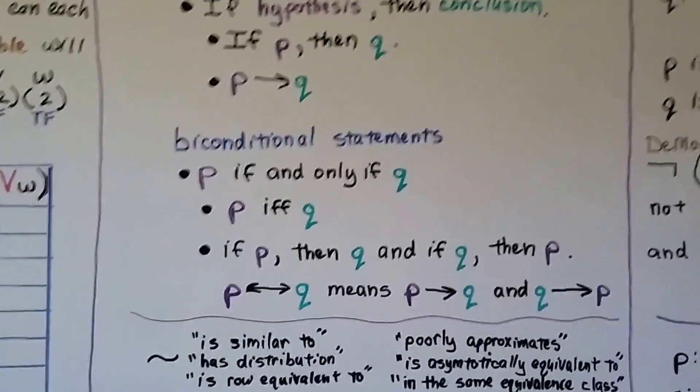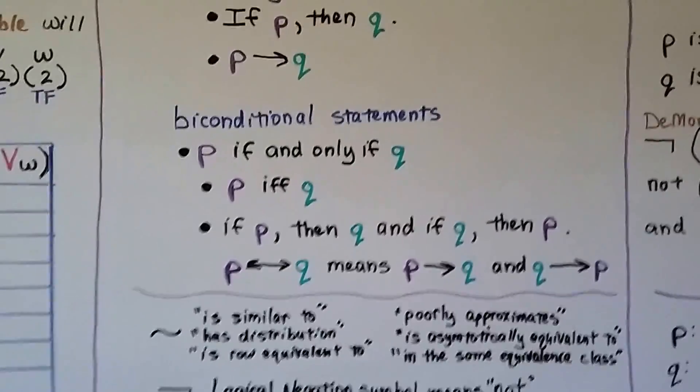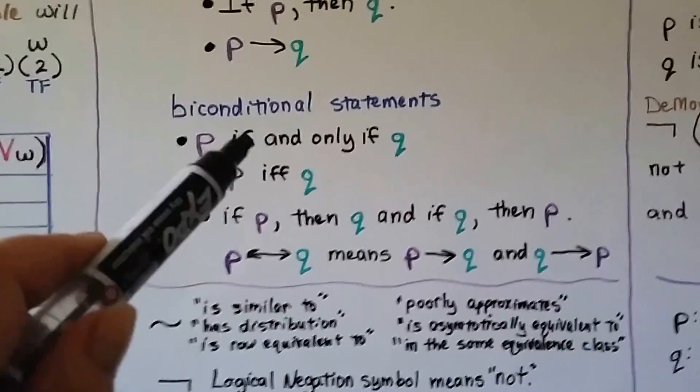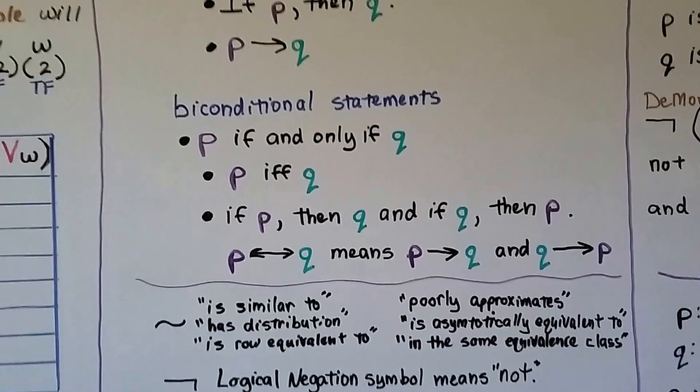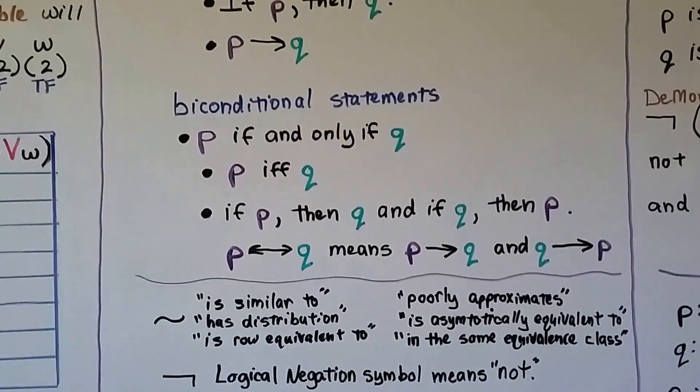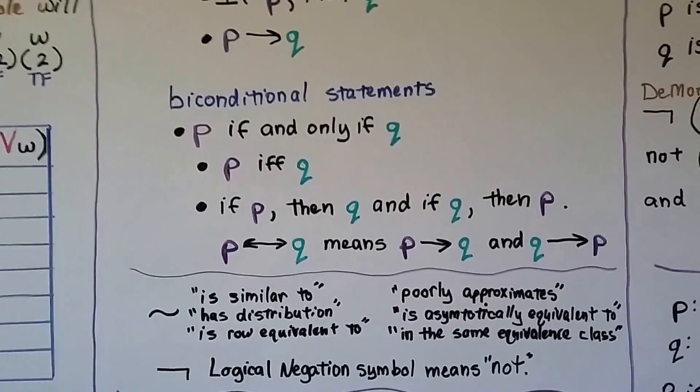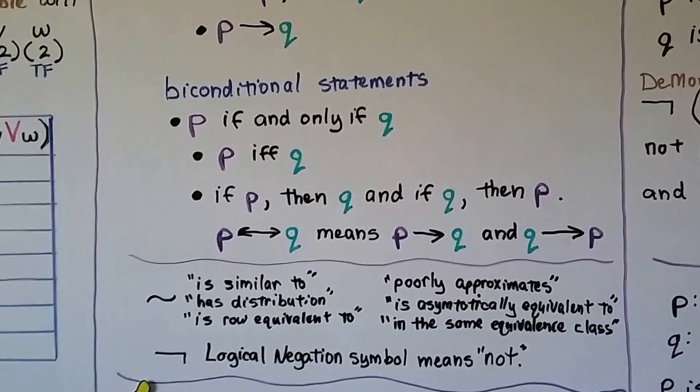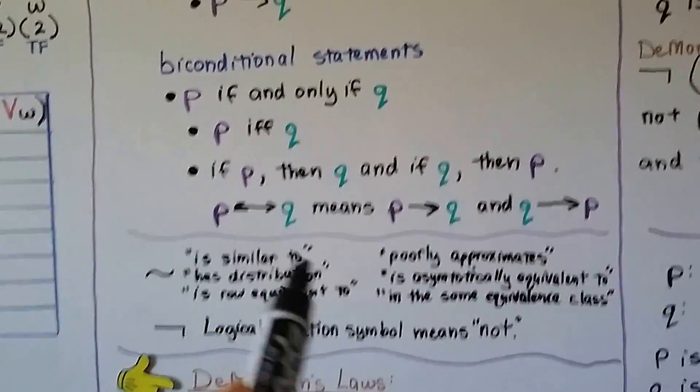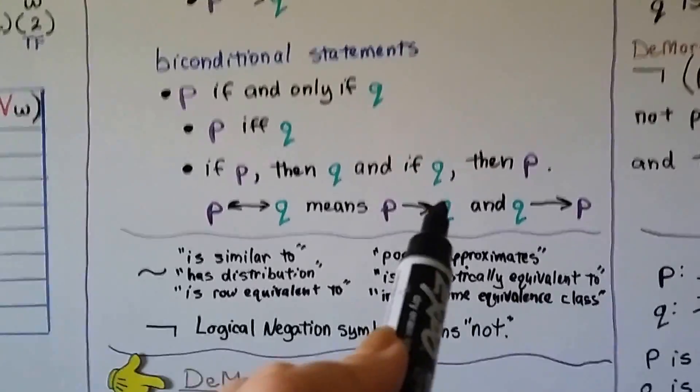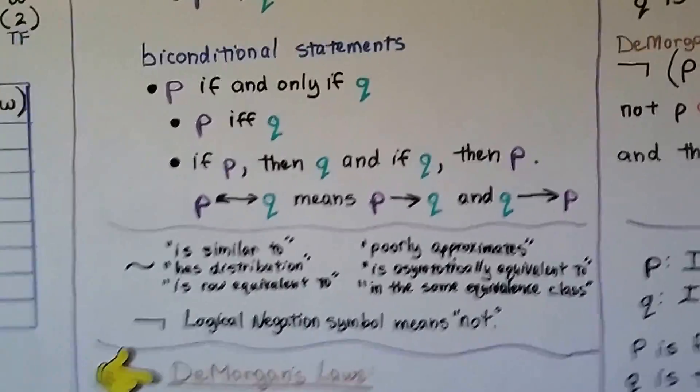For biconditional statements, we've got P, if and only if Q. So if you remember, if and only if can be abbreviated to IFF. So we have P, IFF, Q. And if P, then Q, and if Q, then P would be P with a two-sided arrow, Q, means P, therefore Q, and Q, therefore P.